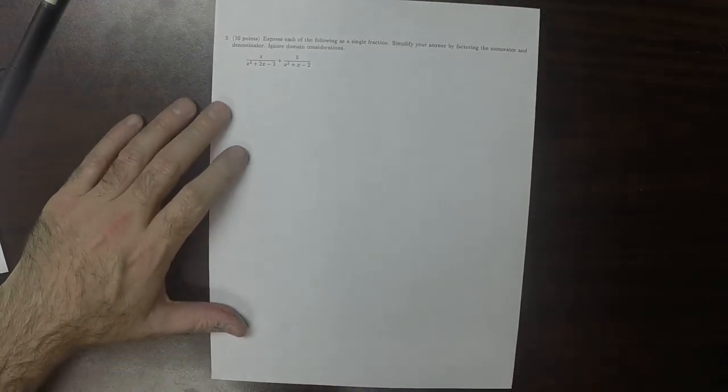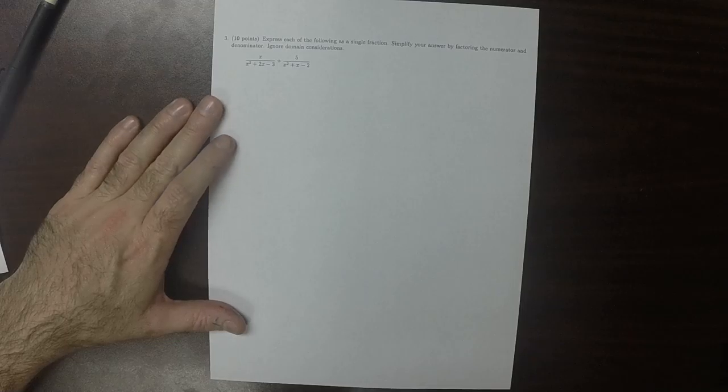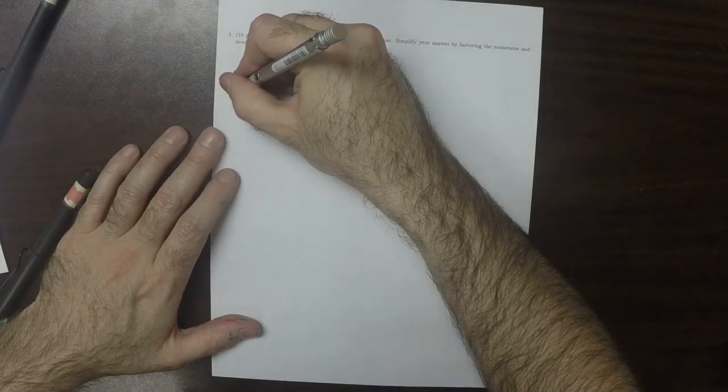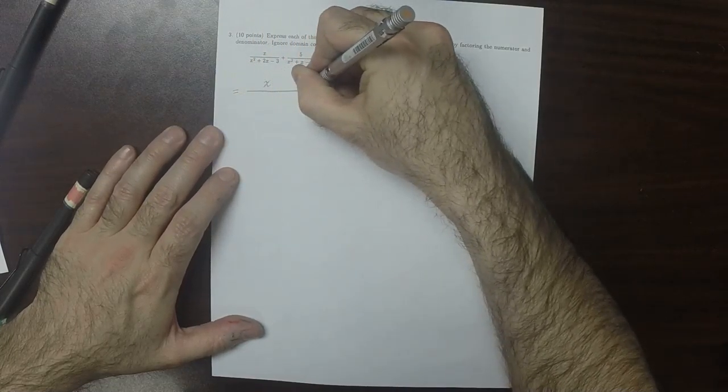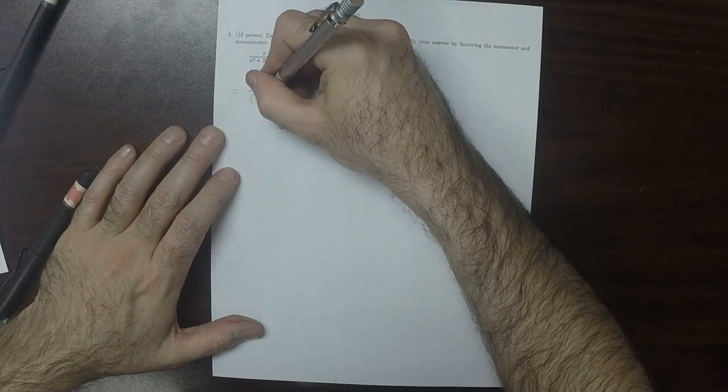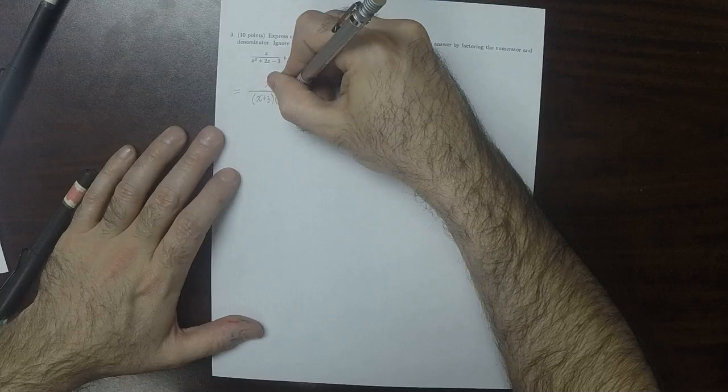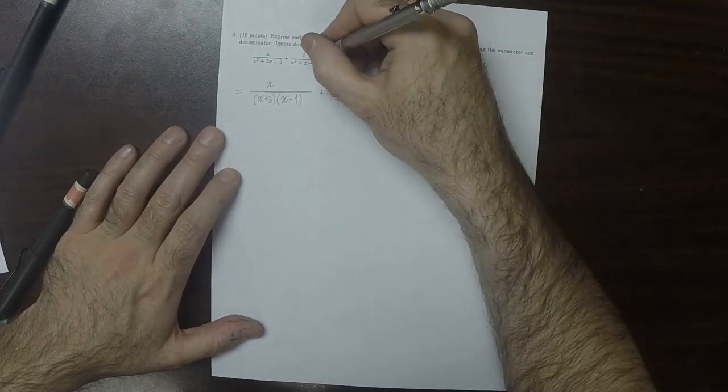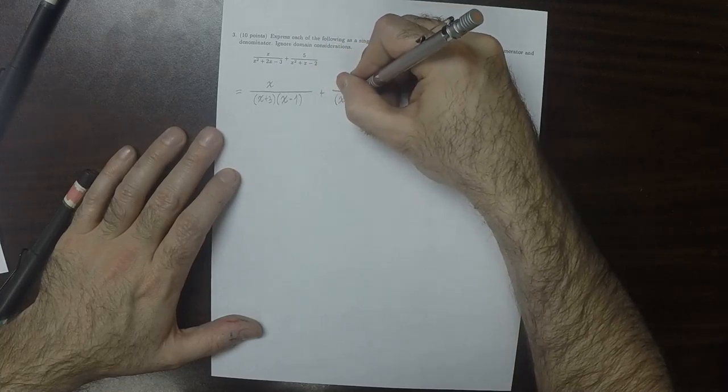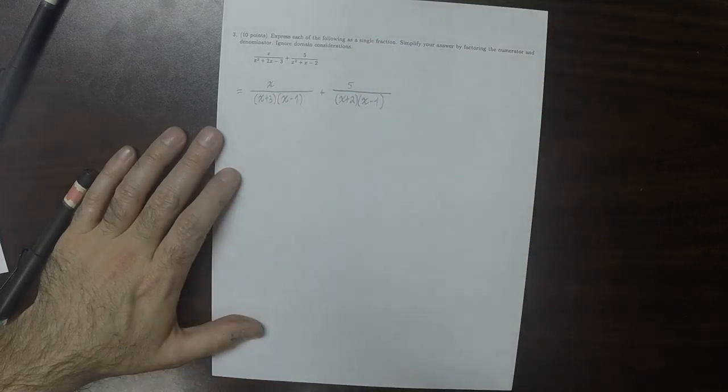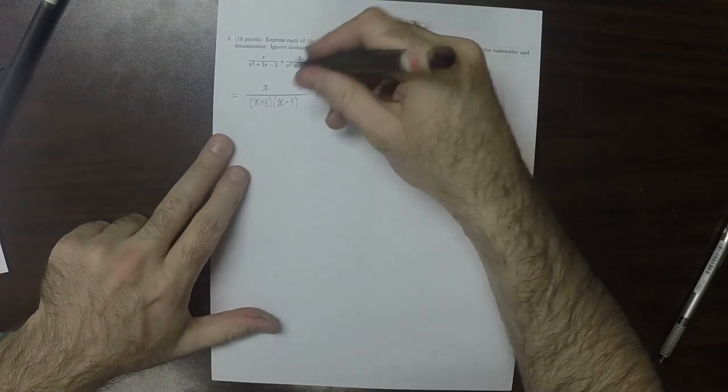Express the following as a single fraction. So what we need to do is factor each of these. So how about x plus 3 times x minus 1 for that first one, and then plus 5 over x plus 2 times x minus 1. So now, you can see that these are the same.